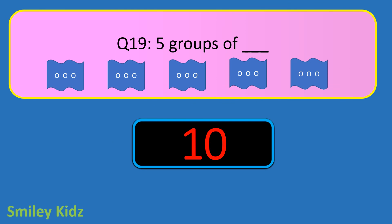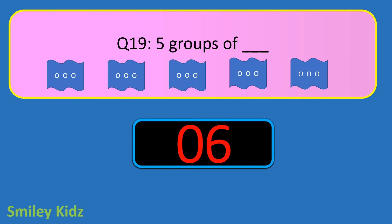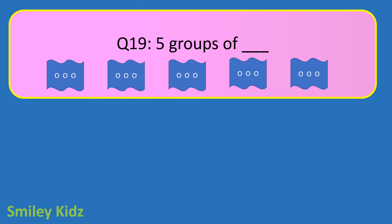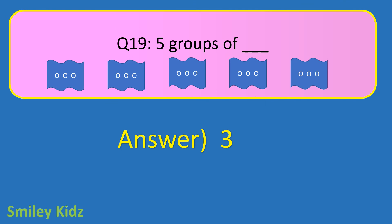Question number 19. 5 groups of blank. Your time starts now. And your time is up. The right answer is 3. 5 groups of 3.